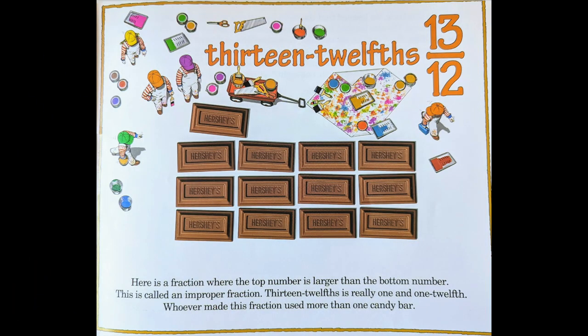Thirteen twelfths. Here is a fraction where the top number is larger than the bottom number — this is called an improper fraction. Thirteen twelfths is really one and one twelfth. Whoever made this fraction used more than one candy bar.